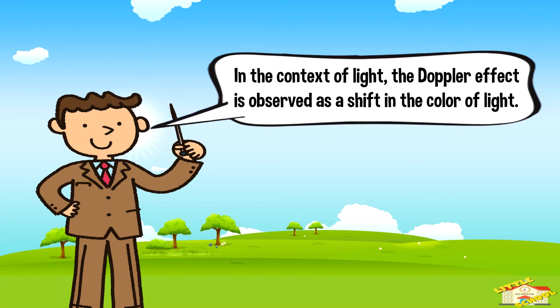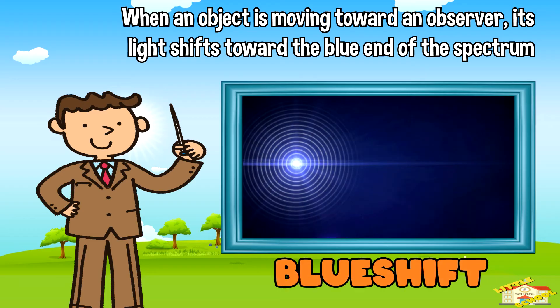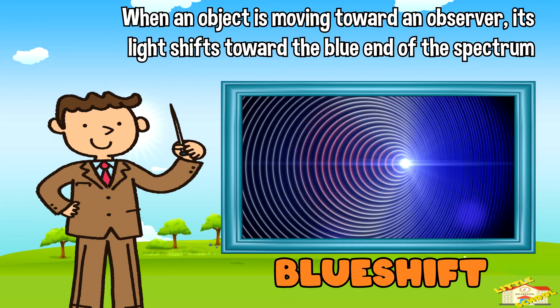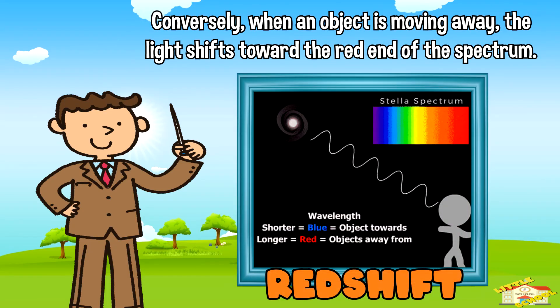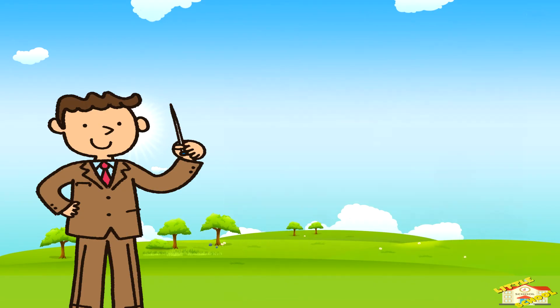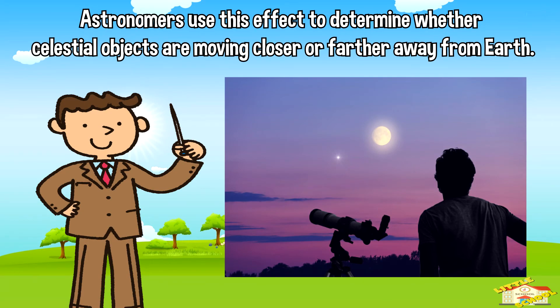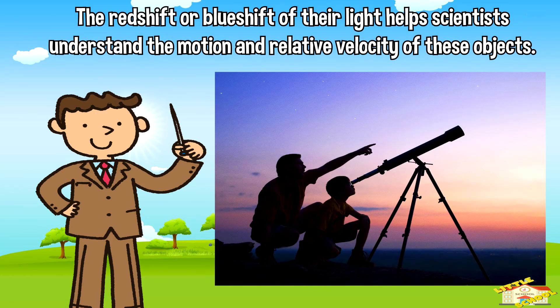In the context of light, the Doppler effect is observed as a shift in the color of light. When an object is moving towards an observer, its light shifts towards the blue end of the spectrum. Conversely, when an object is moving away, the light shifts towards the red end of the spectrum. Astronomers use this effect to determine whether celestial objects like stars or galaxies are moving closer or farther away from Earth.